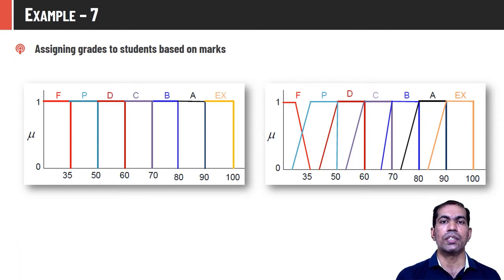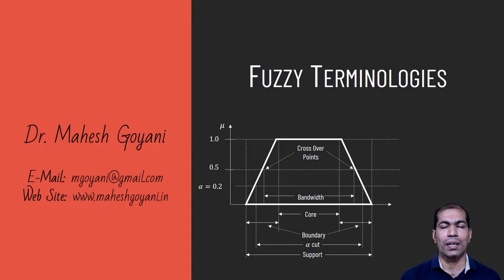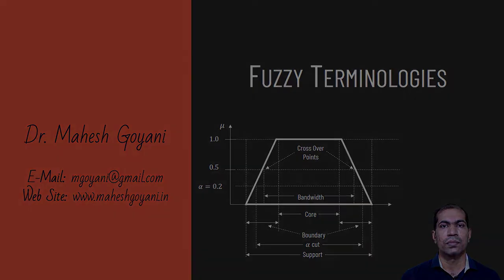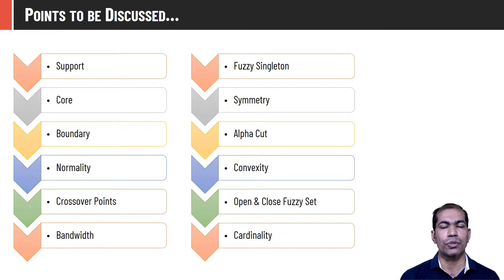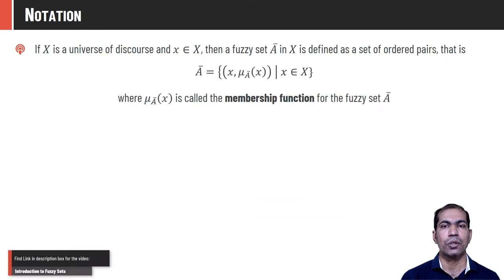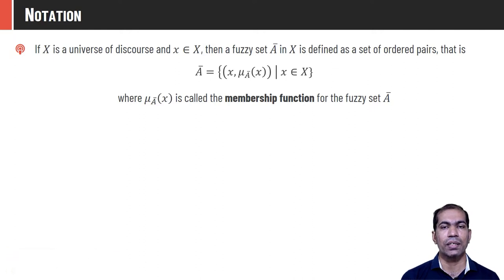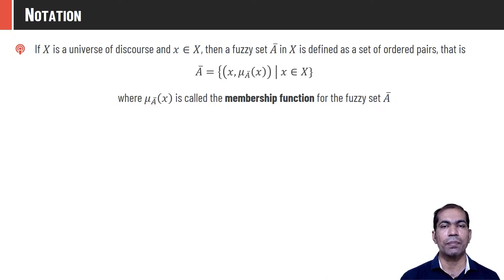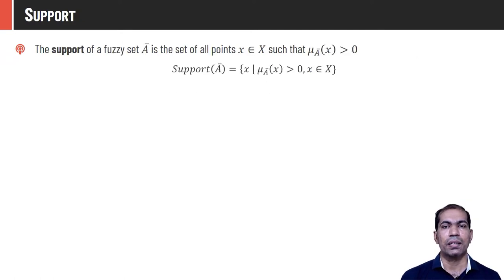Hello folks, welcome to CodeCrux. This is Mahesh Giovanni. In this video, I am going to talk about various fuzzy terminologies. The fuzzy set Ā is defined by a tuple (x, μ_Ā(x)) where x is an element from universe of discourse X and μ_Ā(x) is the membership value. Support of fuzzy set Ā is a crisp set of all elements whose membership value is non-zero — mathematically, support(Ā) = {x | μ_Ā(x) > 0, x ∈ X}.